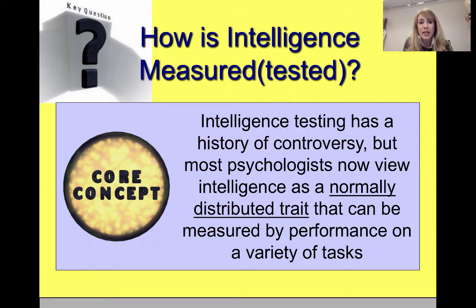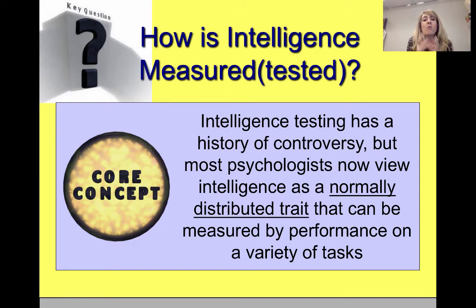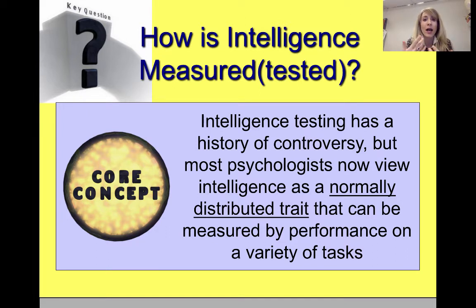It's highly controversial — is intelligence one thing or multiple things? Most psychologists now view intelligence as a normally distributed trait, meaning IQ falls on a bell curve. We can measure IQ by giving different types of performance tasks, both verbal and nonverbal, and then place your score within that normal distribution.